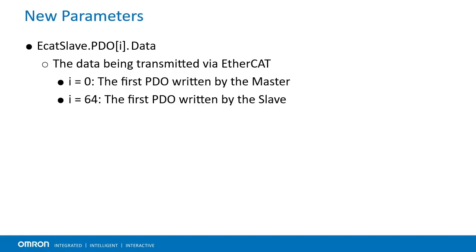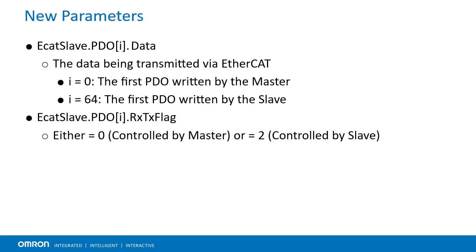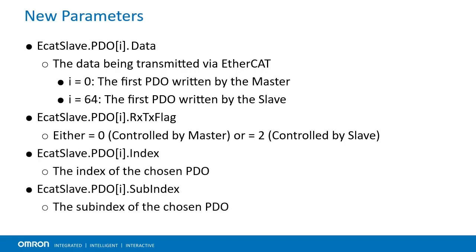This can be confirmed by checking ECATSlave.PDOindex[i].rxtx_flag. If this parameter is 0, write protection is enabled and PMAC can only receive data in that register — the user cannot write to it. If this parameter is 2, the user can write to this value and the master will receive the value written. Users can also check ECATSlave.PDOindex[i].index and ECATSlave.PDOindex[i].subindex to see where the data will be stored and where the master device will read it.